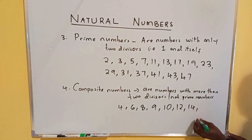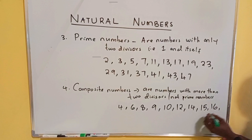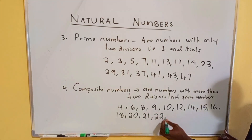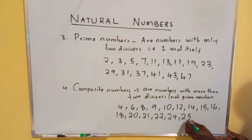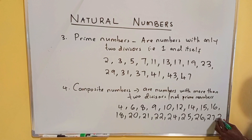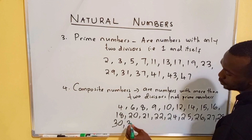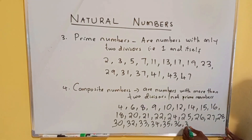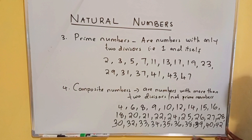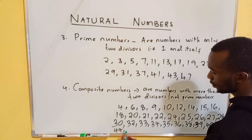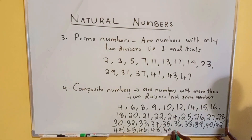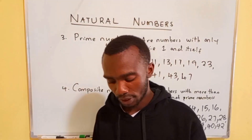Let me list the composite numbers from 1 to 50: 14, 15, 16, 18, 20, 21, 22, 24, 25, 26, 27, 28, 30, 32, 33, 34, 35, 36, 38, 39, 40, 42, 44, 45, 46, 48, 49, and finally 50. These are the composite numbers ranging from one to fifty. Thank you — subscribe to the channel for more updates.